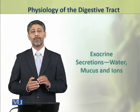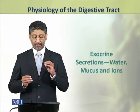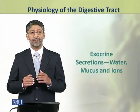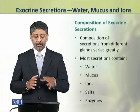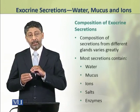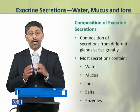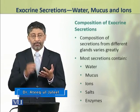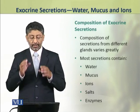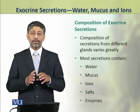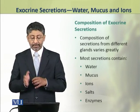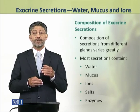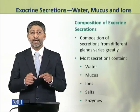Dear students, in this topic we shall discuss the water, mucus, and ion constituents of exocrine secretions. The exocrine secretions are composed of mainly water, mucus, ions, salts, and enzymes. Although their proportion varies in secretions from different glands, most of the secretions of these exocrine glands contain these components.